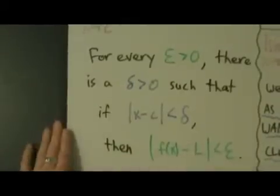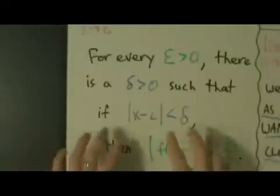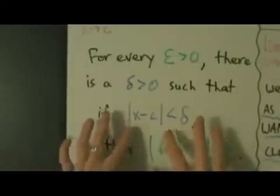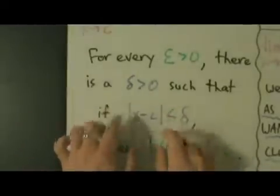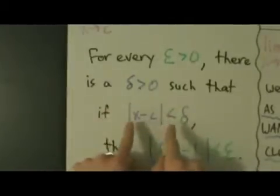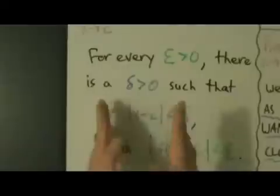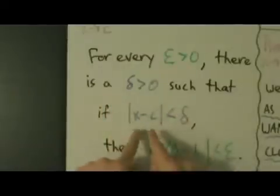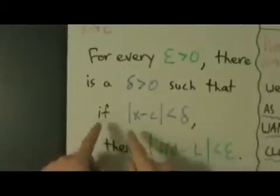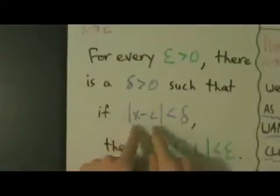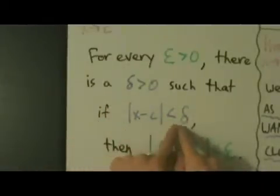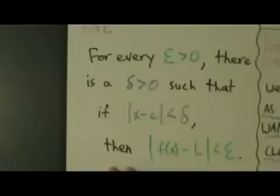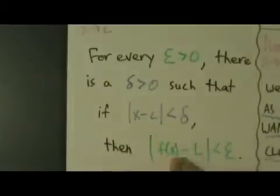Before we move on, let's just recall real quick: when we say absolute value of x minus c, that just means the distance between x and c. So here, if the distance between x and c is less than delta, then the distance between f of x and L is less than epsilon.